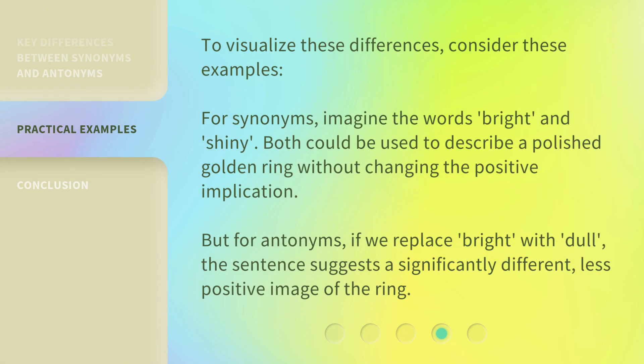To visualize these differences, consider these examples. For synonyms, imagine the words bright and shiny — both could be used to describe a polished golden ring without changing the positive implication. But for antonyms, if we replace bright with dull, the sentence suggests a significantly different, less positive image of the ring.